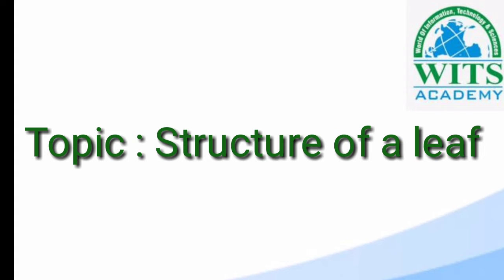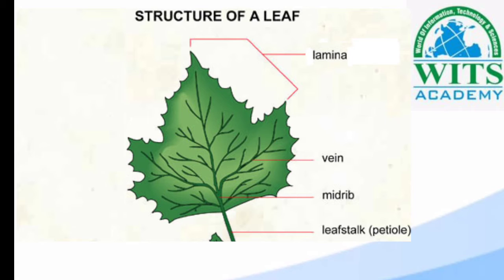آج ہم بات کریں گے leaf کے structure کے بارے میں۔ اگر ہم leaf کو ایک powerful microscope کے ذریعے دیکھیں تو ہمیں leaf میں چار چیزیں نظر آئیں گی: midrip، leaf stalk، lamina۔ آپ اس picture میں دیکھ سکتے ہیں کہ جو leaf کا mid ہے، وہاں پر ایک line vein کی طرح بنی ہوئی ہے۔